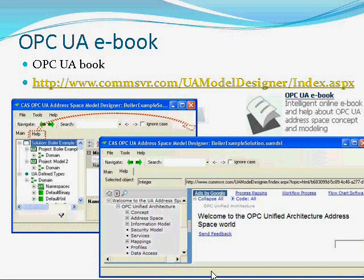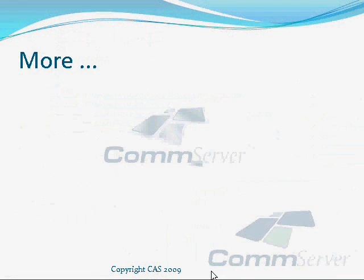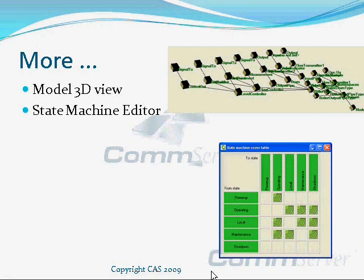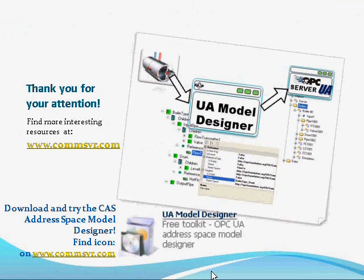You can also access this eBook directly from the CommServer portal. To do it, find the OPC UA eBook icon on the main page. Additionally, the address space model designer supports 3D visualization of the model and special editors like state machines, exporting tools and many more. Thank you for your attention. You can find other interesting resources on our CommServer portal. If you want to try the address space model designer, download it directly from the CommServer portal — it is available for free.